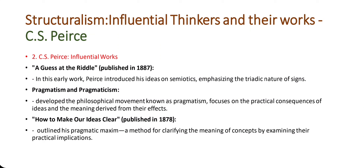Peirce developed the philosophical movement known as pragmatism, which focuses on the practical consequences of ideas and the meaning derived from their effects. Later, he refined this into pragmaticism, distinguishing it from other interpretations of pragmatism. In his essay How to Make Our Ideas Clear, published in 1878, Peirce outlined his pragmatic maxim — a method for clarifying the meaning of concepts by examining their practical implications. This work laid the foundation for his pragmatic approach to semiotics.